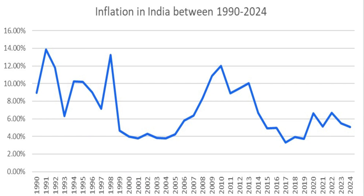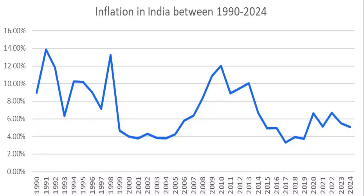If we analyze the inflation data between 1990 and 2024, it clearly shows waves forming part of the inflation trend. Looking at where inflation peaked, how it got reduced, paused, and increased again over a period of time, we can come to a clear understanding of the cyclical pattern.